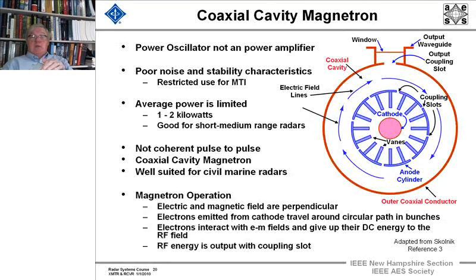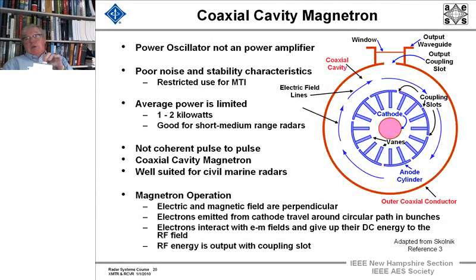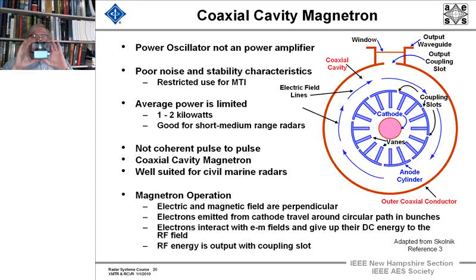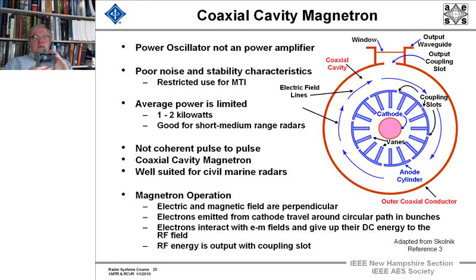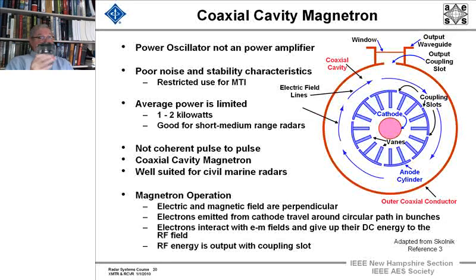It looks like this is probably where the microwave energy comes out, this is where the power comes in, and these are cooling vanes because it isn't 100% efficient. One of these costs $100. Germany and Japan would have paid a big pile of change to have one of these during World War II.